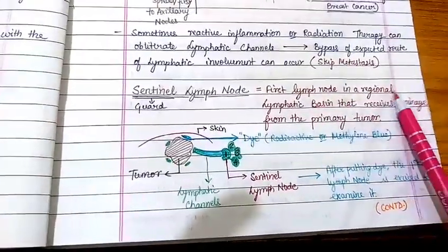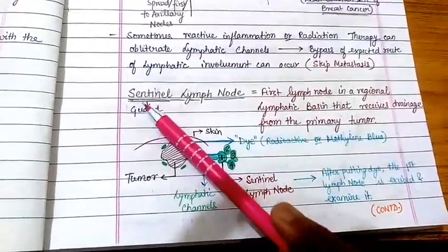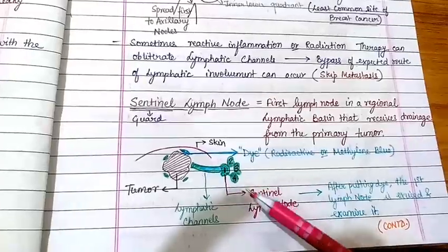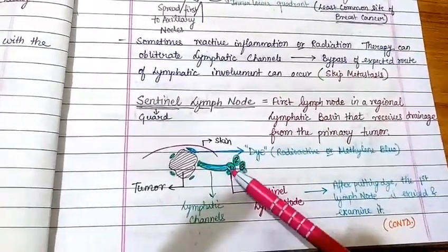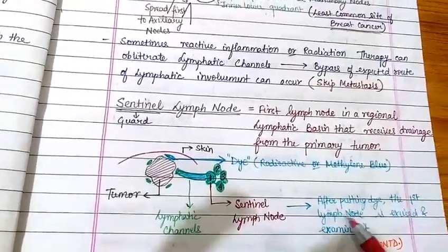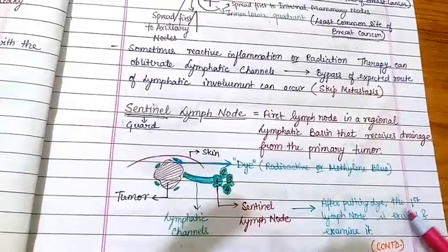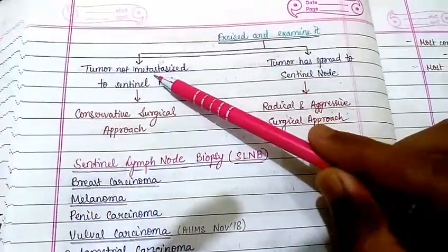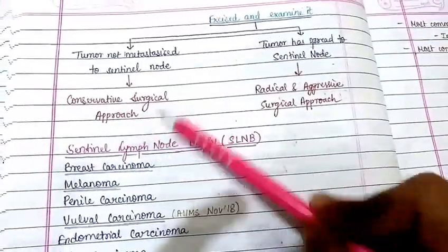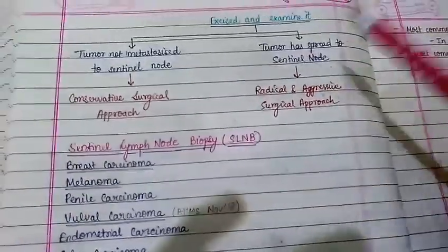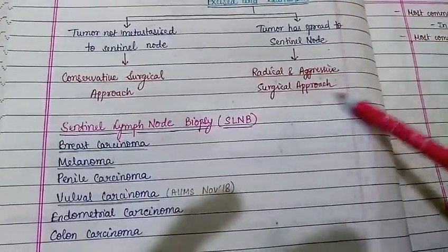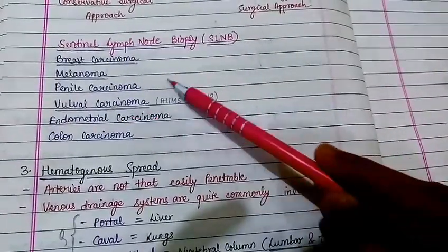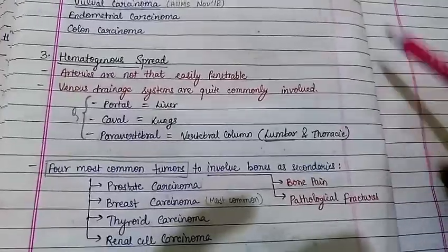The sentinel lymph node is the first lymph node in the regional lymphatic basin that receives drainage from the primary tumor. A dye (radioactive or methylene blue) is injected, the first lymph node is excised and examined. If the tumor has not metastasized to the sentinel node, a conservative surgical approach is taken. If the tumor has spread to the sentinel node, a radical/aggressive surgical approach is needed. Sentinel lymph node biopsy is used in breast carcinoma, melanoma, penile carcinoma, vulvar carcinoma, endometrial carcinoma, and colon carcinoma.